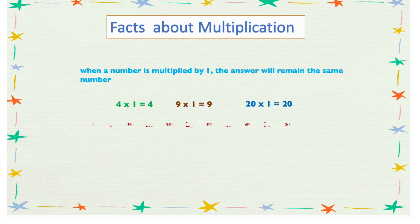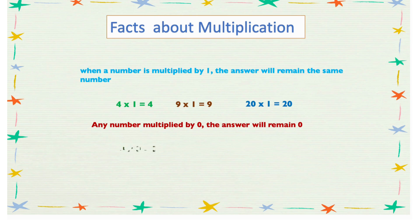Another fact is: any number multiplied by 0, the answer will remain 0. For example, 4 times 0 is 0, 7 times 0 is 0, 12 times 0 is 0, and so on with any number.